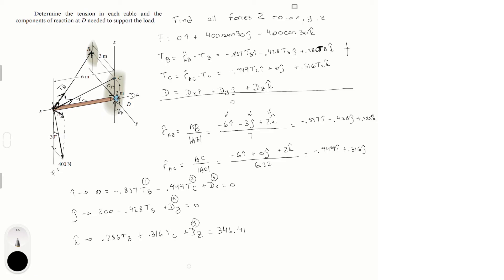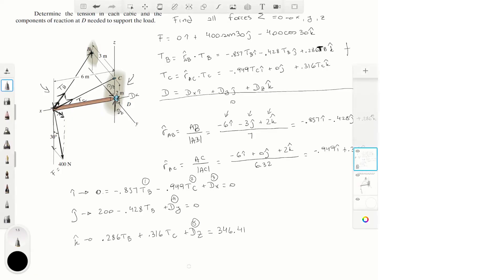We need to take moments around a point to get more equations. I always say look at all the points and find the one with the most unknowns. Point A has two unknowns (TB and TC), but point D has three unknowns, so we're going to take moments around point D.